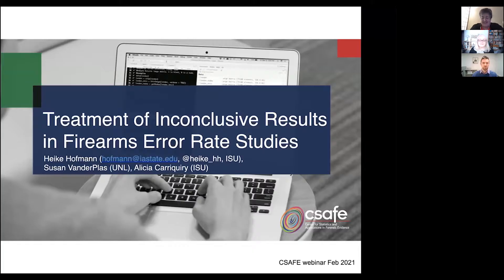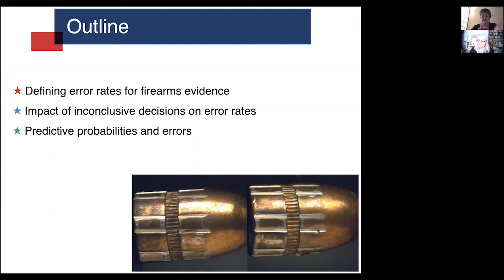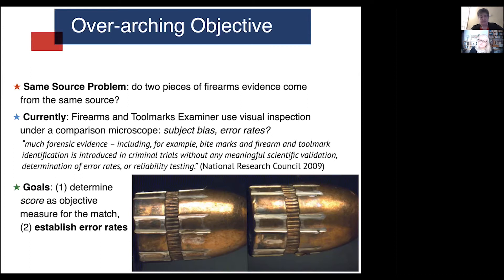Thank you, Anthony. This is the first webinar in our series for 2021. This is joint work with Alicia Kirikiri and Susan van der Plaas: 'Treatment of Inconclusive Results in Firearms Error Rate Studies.' I'm going to talk about how error rates for firearms evidence and case studies are defined, then look at how inconclusive decisions impact error rates, and finally look into predictive probabilities and errors.